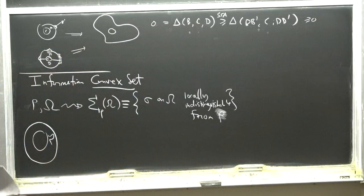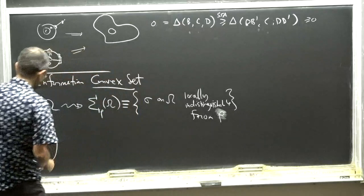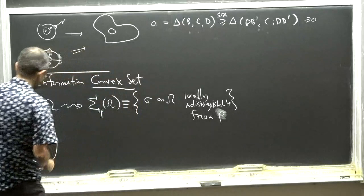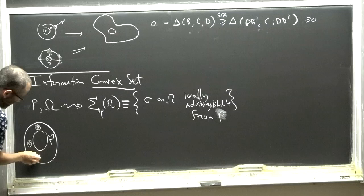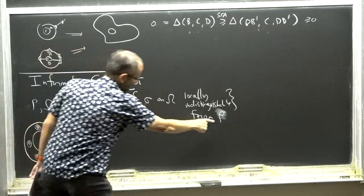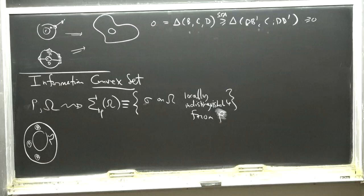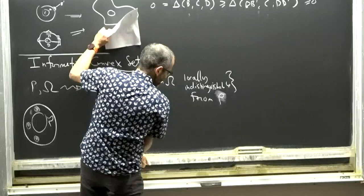What does 'locally indistinguishable' mean? You draw little balls inside here, and for every little ball you draw, the reduced density matrix of your candidate state and of the reference state must agree. The idea is: think of this reference state as a vacuum, the ground state we're trying to study. States in the information convex set locally look like the vacuum everywhere in this region, but outside the region they can do whatever they want.